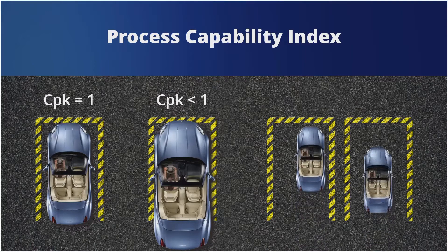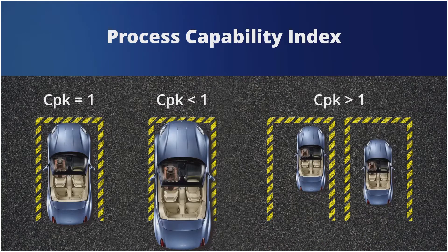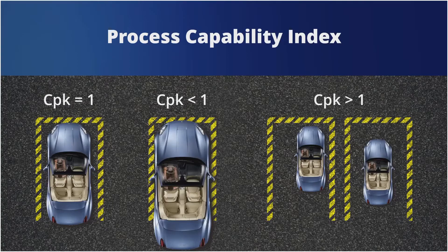And finally, the ideal situation where the car is much smaller than the garage — you can park easily and be a little off-center without any problem. This represents a CPK greater than one, and this is what you want for producing good parts easily.